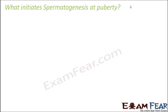So now the question is: I told you that the process of spermatogenesis starts at puberty. What special happens at puberty that spermatogenesis starts? When it was not happening since birth, how come suddenly some changes happened at puberty that this process got initiated?